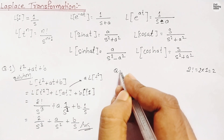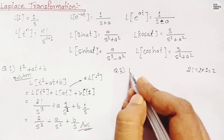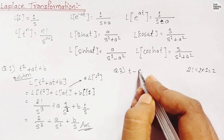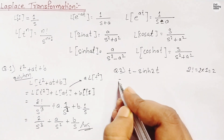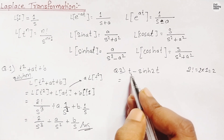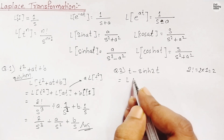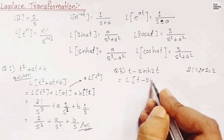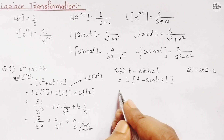Question number two: find the Laplace transformation of t - sinh(2t). This is a single expression with two terms: t and -sinh(2t).